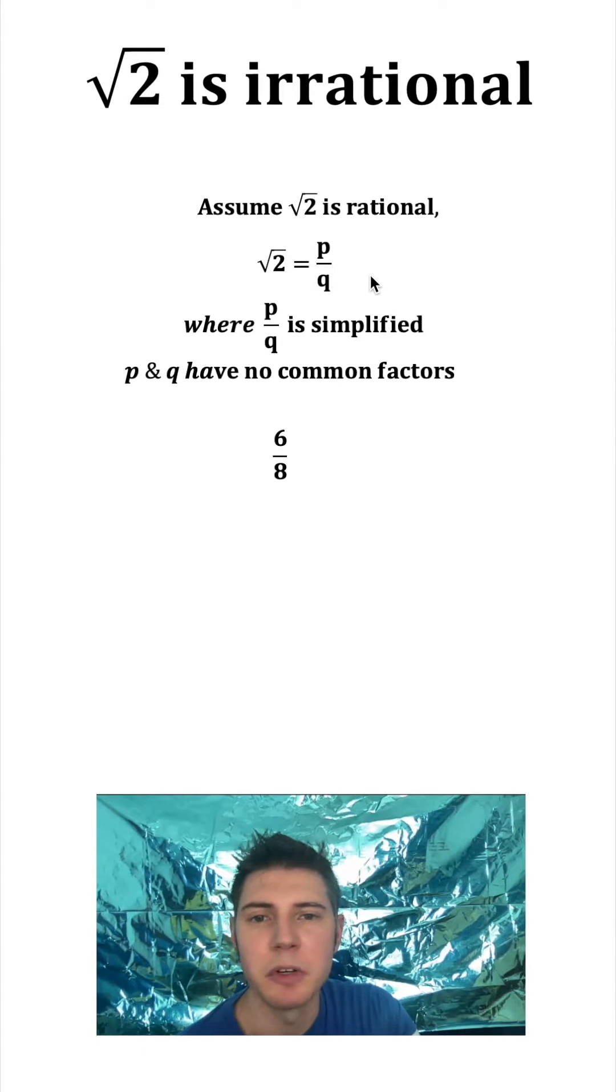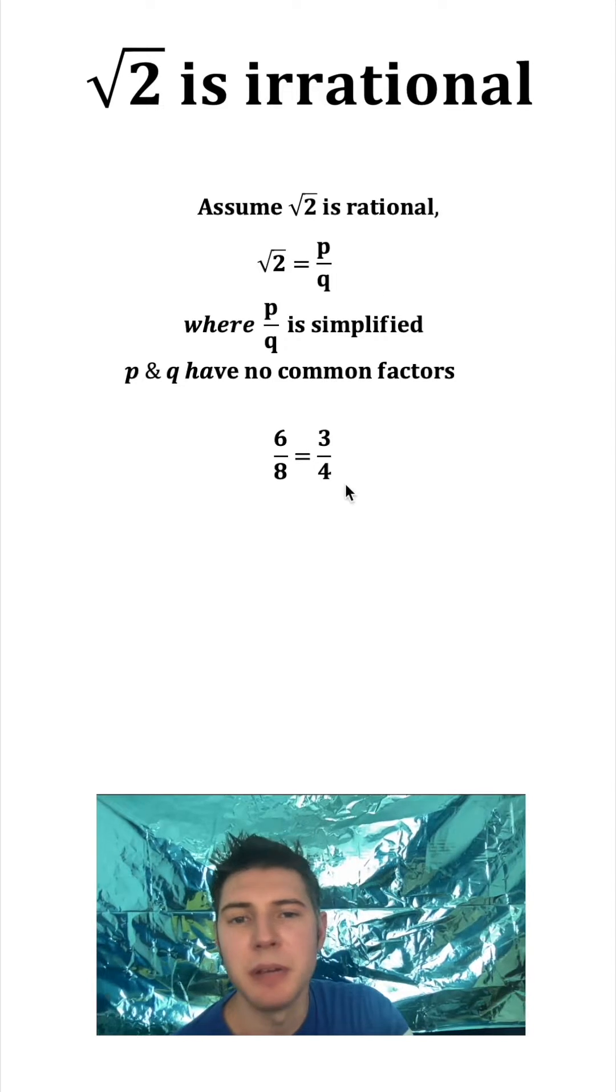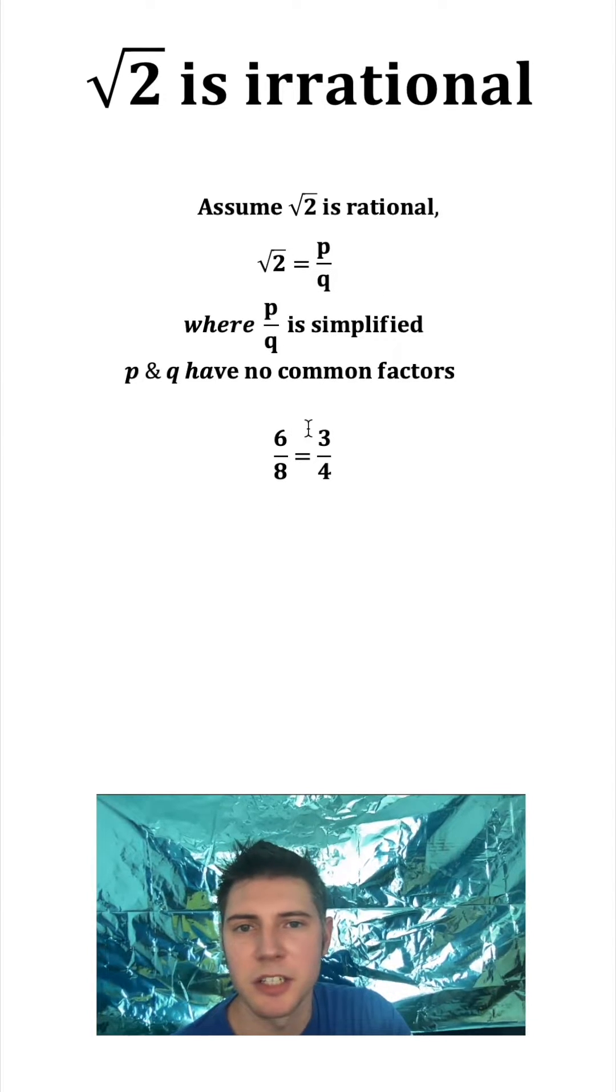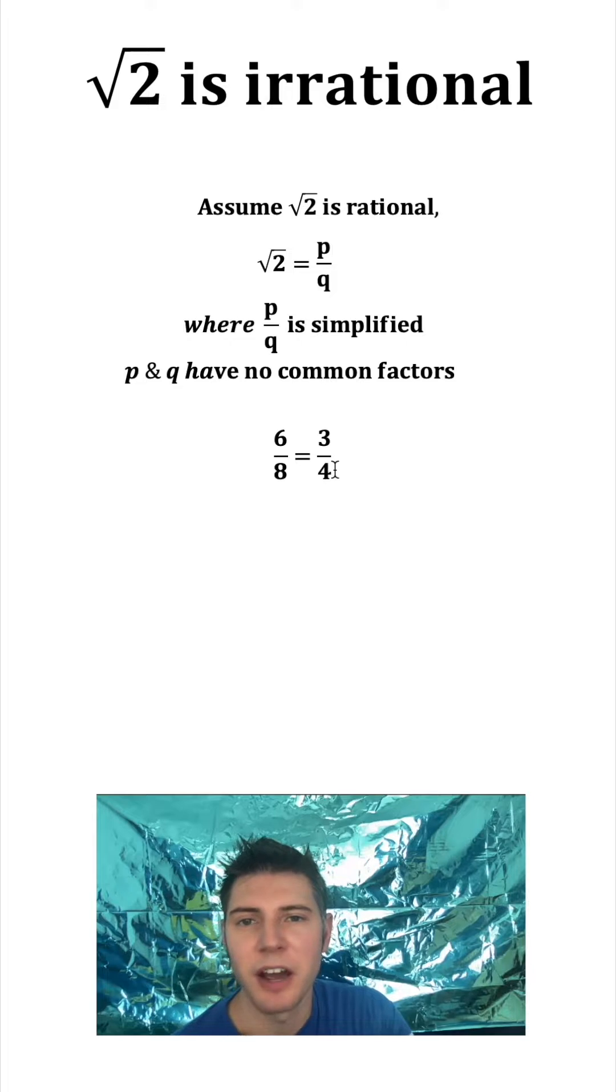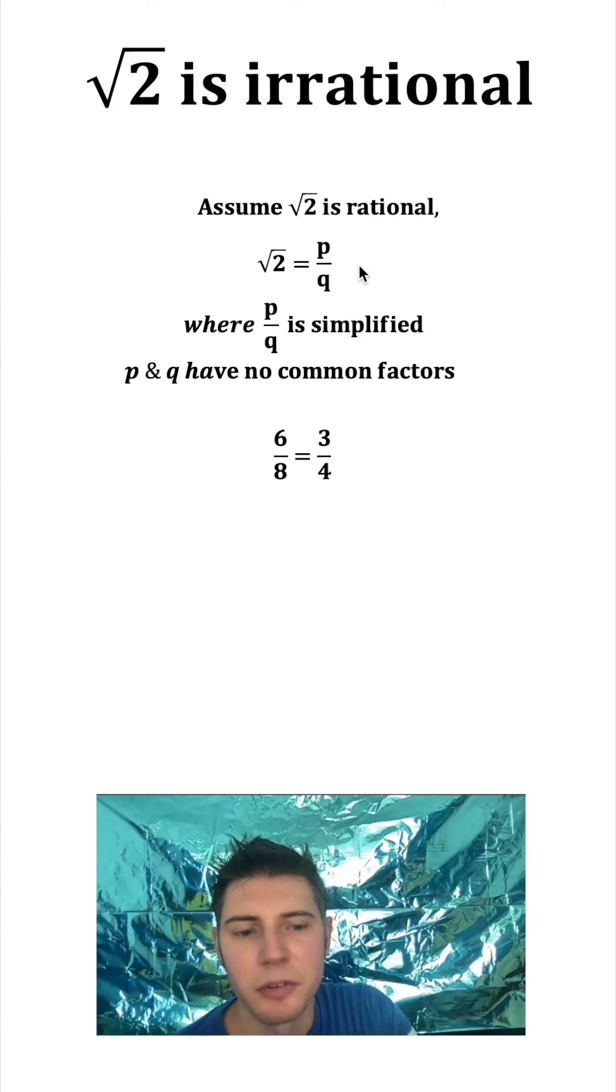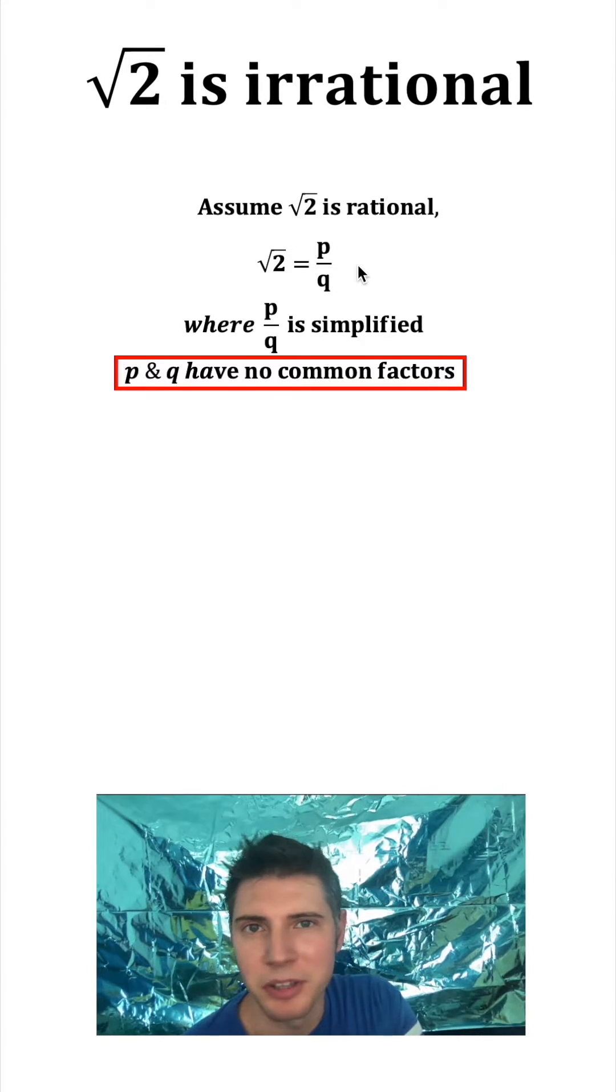So if P and Q were 6 and 8, we'd want to reduce that to 3 and 4, and then begin our proof. So there's nothing wrong with it being 6 over 8, but we don't want to start the proof until we've found the lowest common factors, P over Q. And this is an important fact, so I'm going to put this in a box.